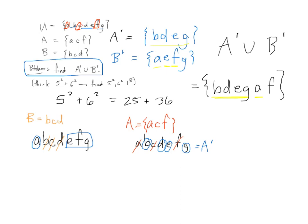So I'm just going to set about finding B prime and A prime independently of the problem. So how do I find B prime? I list out U. I cross off the elements in B. Whatever's left is B prime. How do I find A prime? I again list out the elements in U, cross out the elements of A. What's left here is A prime.